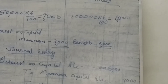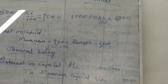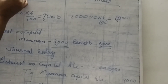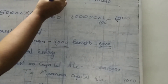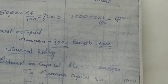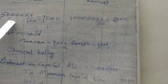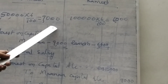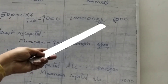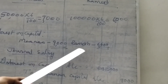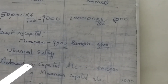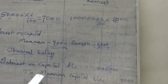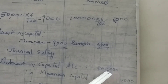We are going to find out the interest on capital for both persons — Mannen as well as Dermesh. For Mannen, capital is 1,50,000, so 6% means 6/100 × 1,50,000 = 9,000. Dermesh: 1,00,000 × 6/100 = 6,000. Interest on capital: Mannen 9,000, Dermesh 6,000. The journal entry for interest on capital is: Interest on Capital Dr. to Mannen's Capital 9,000 and to Dermesh's Capital 6,000, total 15,000. This is the journal entry for interest on capital.